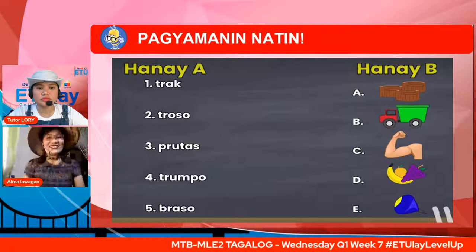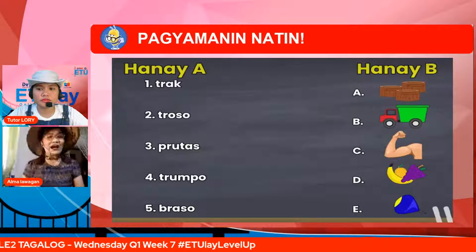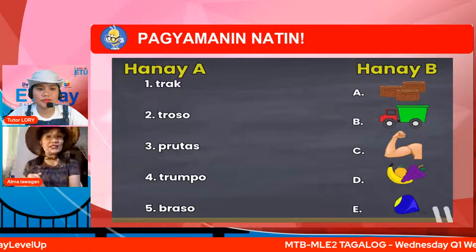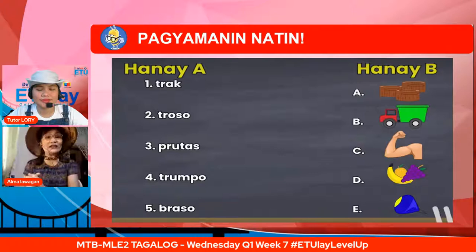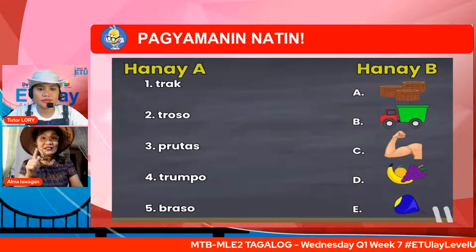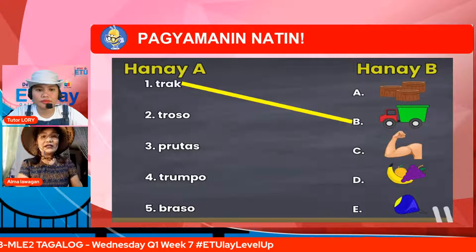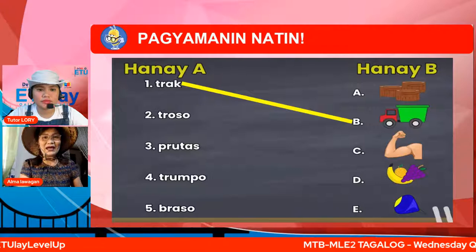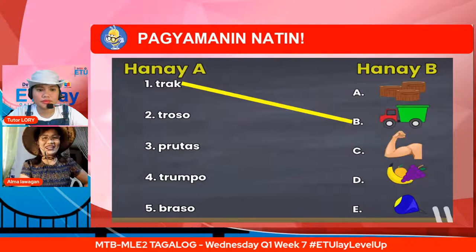Sa unang bilang, ano kaya dito sa hanay B ang dapat itapat — letrang A, B, C, D, o E? Kung ang isinulat ng sagot ay letrang B, ang galing-galing mo, dahil tama ang iyong sagot. Sa pangalawa naman, kambal katinig na tronso — aling kaya sa hanay B ang dapat nating itapat na larawan? Kung ang isinulat mo ay letrang A, mahusay, ang galing mo ito.